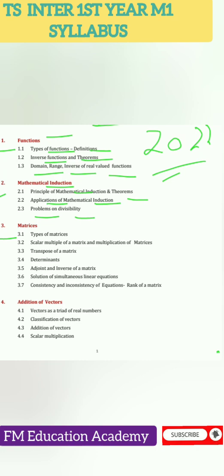Chapter 3 is matrices: types of matrices, scalar multiple of a matrix and multiplication of matrices, transpose of a matrix, determinants, adjoint and inverse of a matrix, solution of simultaneous linear equations, consistency and inconsistency of equations, and rank of a matrix.